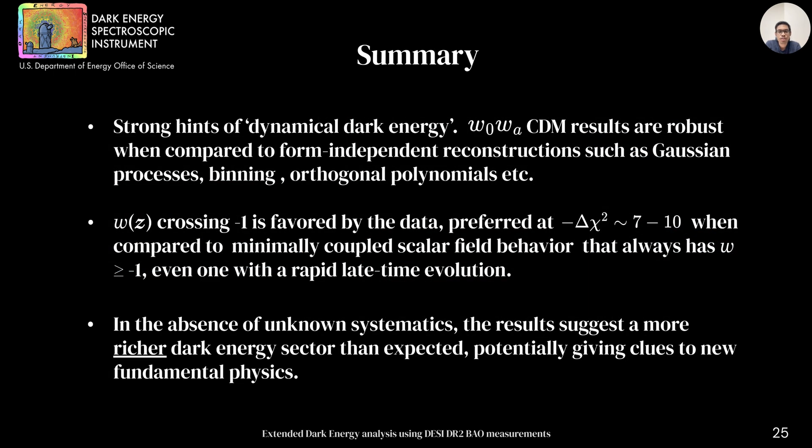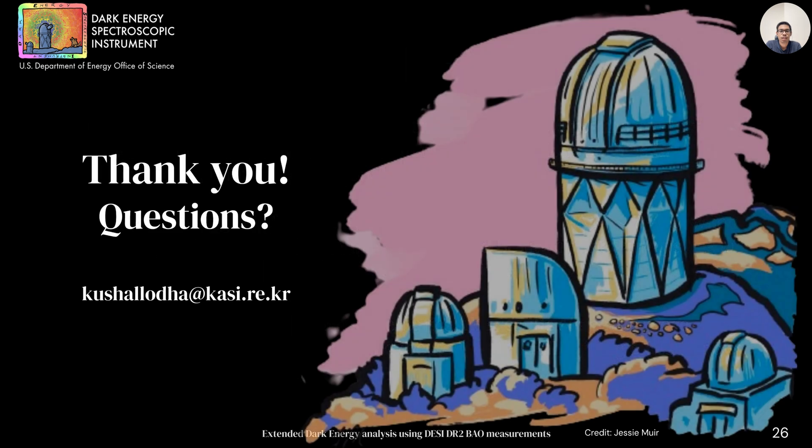To summarize, we see strong hints of dynamical dark energy. Non-parametric reconstructions align very well with w0wa such as Gaussian process, binning, and orthogonal polynomials. The current data prefers models with w crossing minus 1 compared to scalar fields with rapid late-time evolution. If we take data at face value, then our results suggest more richer dark energy sector than expected, potentially giving clues to fundamental new physics. Thank you for listening.